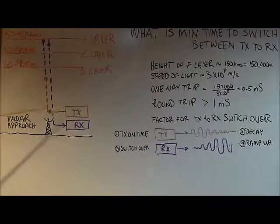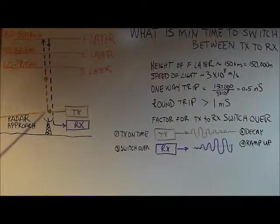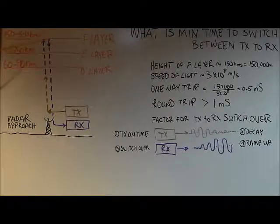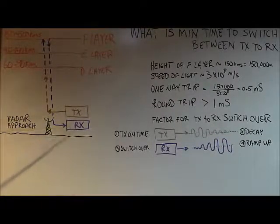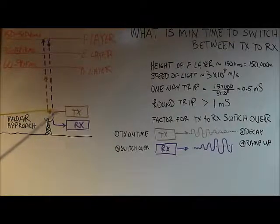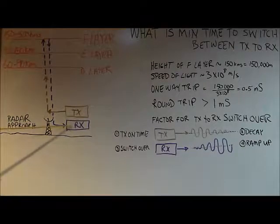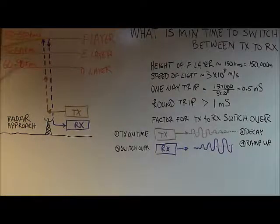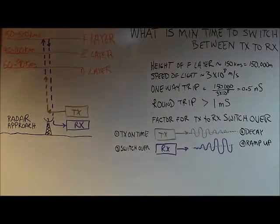The approach I'll be using is to send a signal up to the F layer, that signal will be returned and captured by a receiver. Knowing the speed of light, I can calculate the height of the ionosphere from the time between transmission and reception.